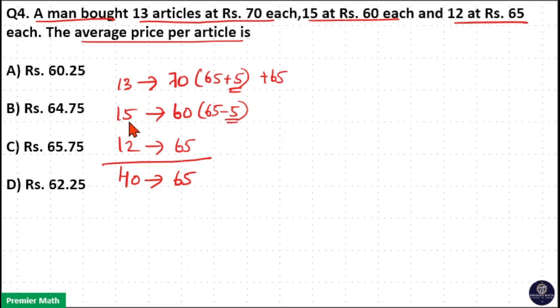Now, minus 5 extra average for these 15 articles. So minus 5 into 15 is equal to minus 75 rupees. Now, here the difference between these two is equal to minus 10 rupees.